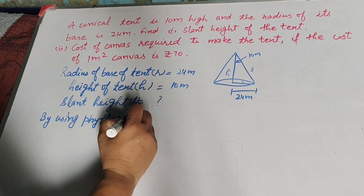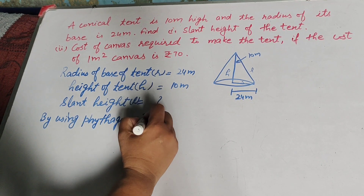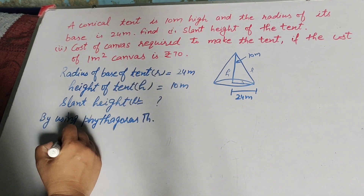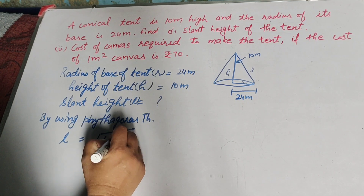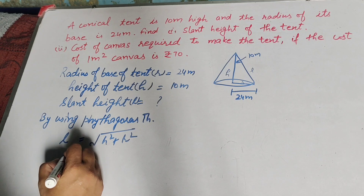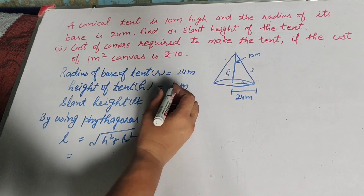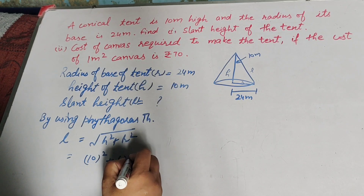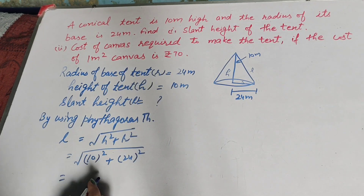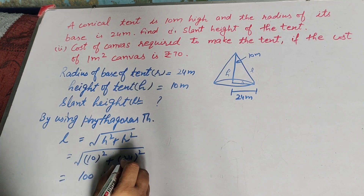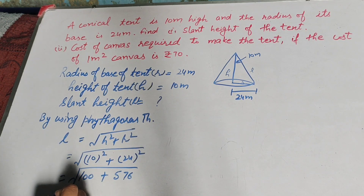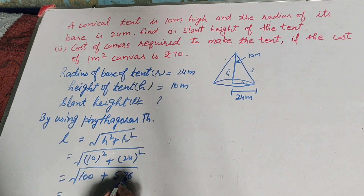By using Pythagoras' theorem, this conical tent forms a right angle triangle. So we find l equal to square root of h squared plus r squared. Here h is equal to 10 meters, so 10 squared, plus r is the radius equal to 24, so 24 squared. 10 squared is equal to 100, plus 24 squared is equal to 576.